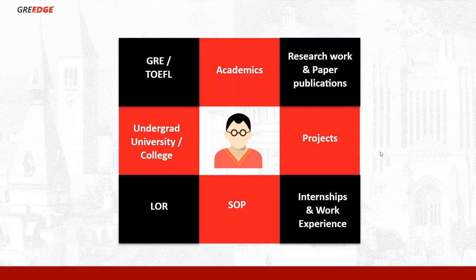The US doesn't discriminate based solely on GPA. Some universities — like Arizona State, Purdue, or USC for certain engineering subjects — do focus heavily on GPA. But about 70% of universities focus on your overall profile: academics, research papers, publications, projects, internship, LOR, and work experience. These are all major aspects.